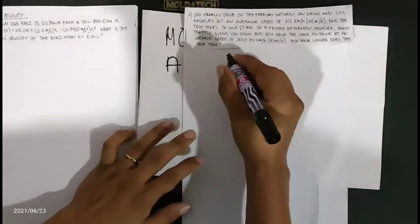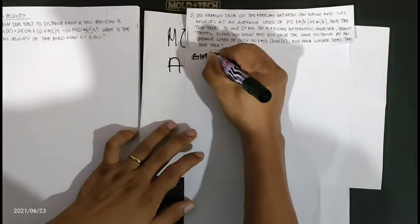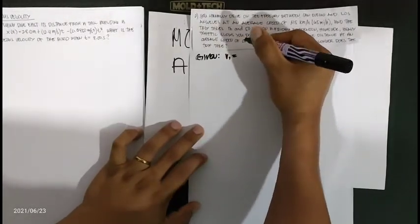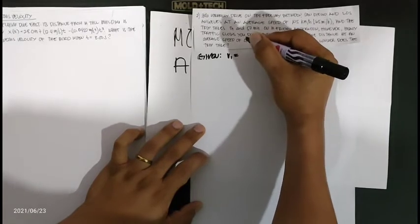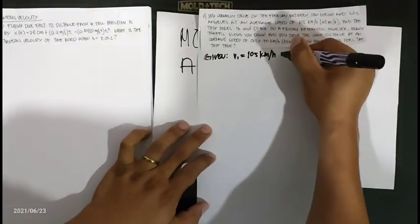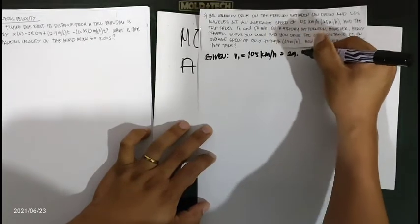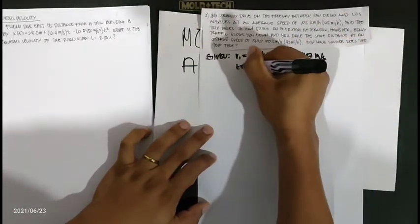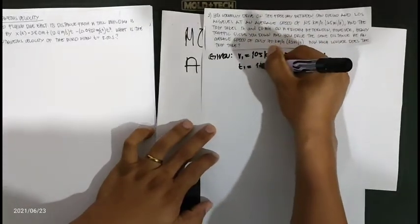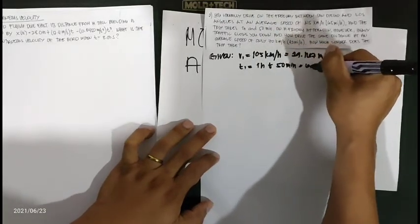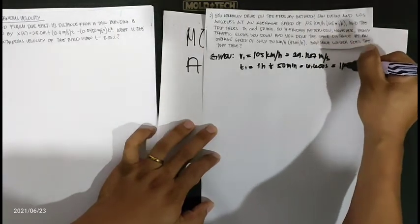First, we identify the given. Velocity 1 between San Diego and Los Angeles is 105 kilometers per hour, which converts to 29.167 meters per second. Time 1 covers only 1 hour and 50 minutes, equal to 6,600 seconds or 110 minutes.